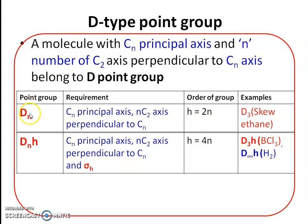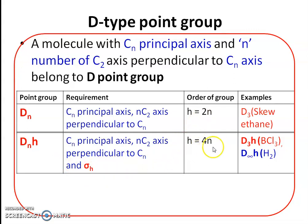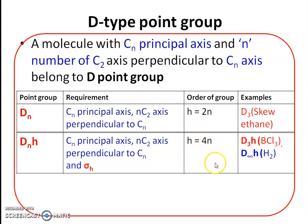What is the difference between Dn and DnH? In DnH there is additionally a horizontal plane. The order of this point group is given by h = 4n, meaning there are 4n number of symmetry elements or symmetry operations.